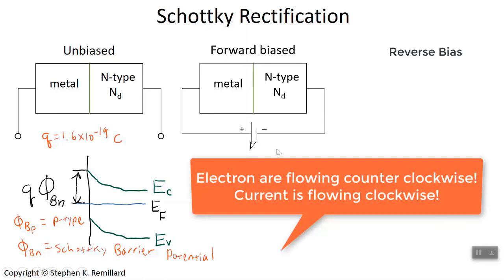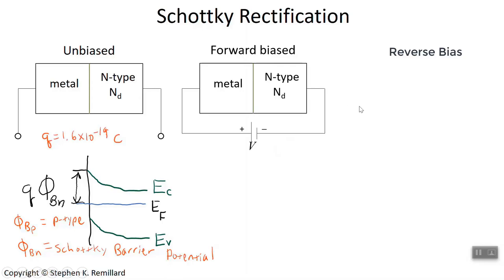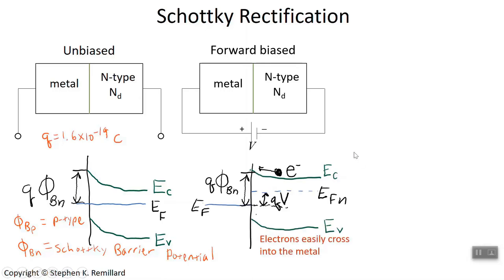Reverse bias would be the opposite — putting the positive terminal on the n-type would attract electrons from the metal into the n-type region, giving rise to a depletion layer and space charge at the interface. The effect of the bias voltage is that it raises the energy bands, because a negative potential on the semiconductor raises the potential energy of electrons there, since electrons don't like to be near negative voltage. So the bands bend up with key constraints.